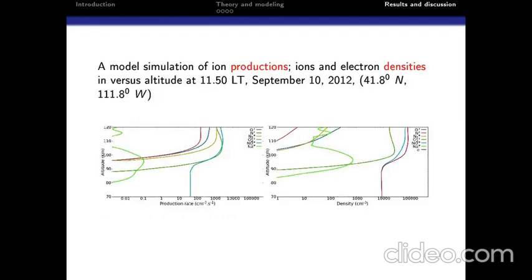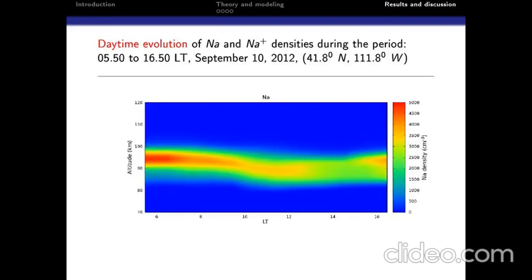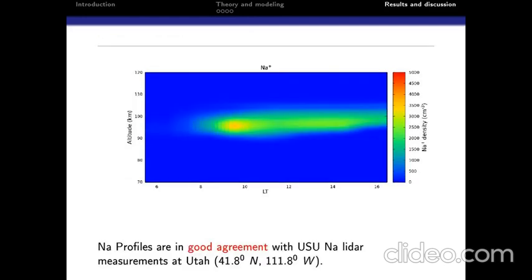In the results part, the first figure shows ion production at left and ion and electron densities at right versus altitude. The next figure shows the daytime evolution of neutral sodium and sodium ion, respectively.